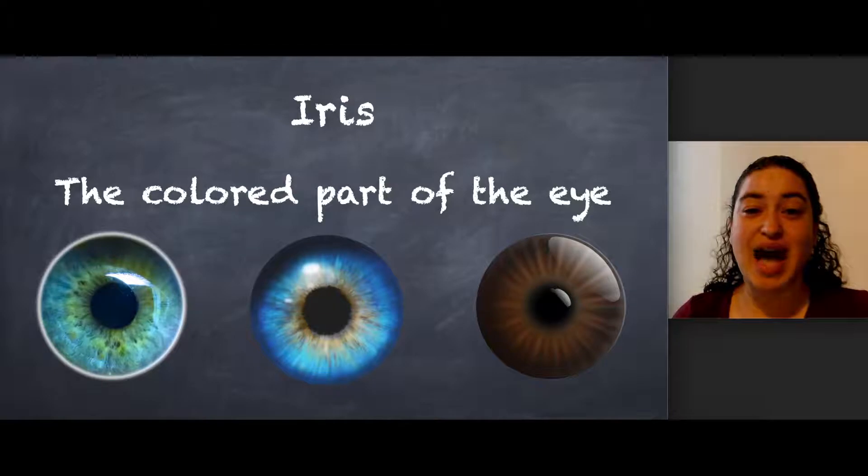The first word is iris. Iris is the colored part of the eye.